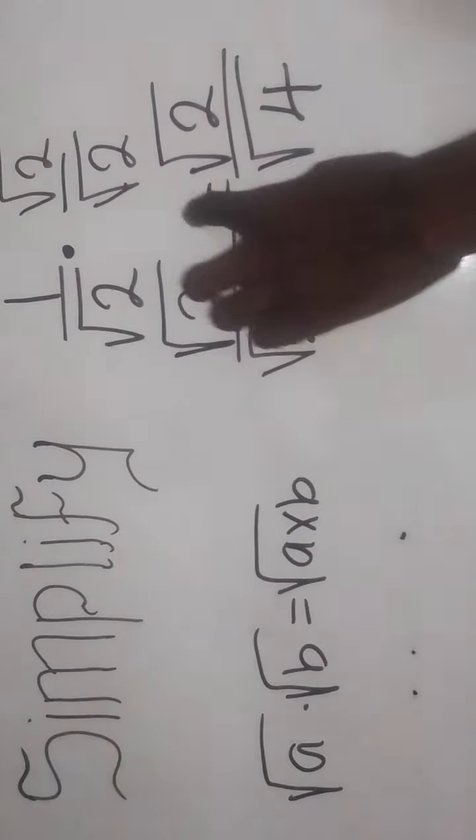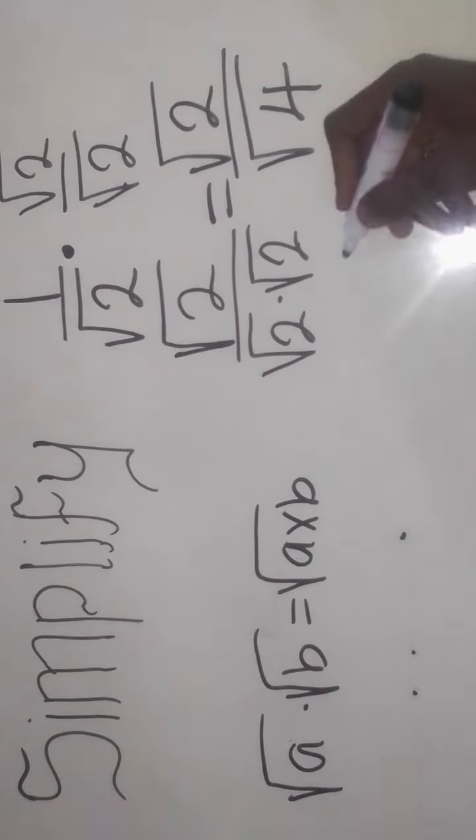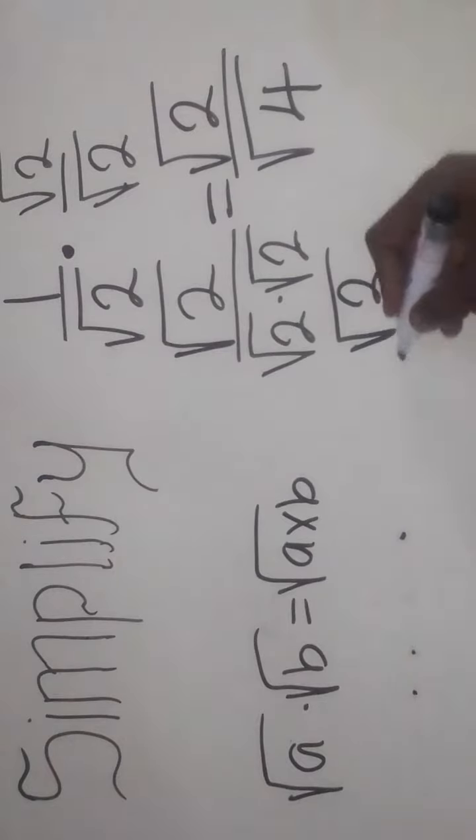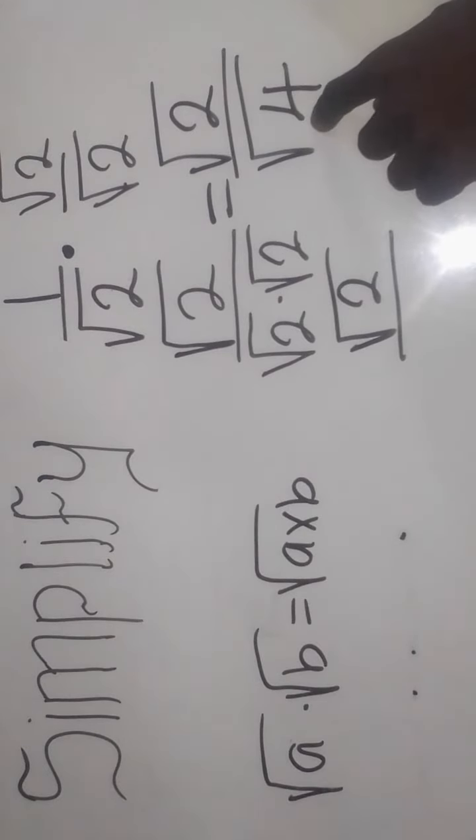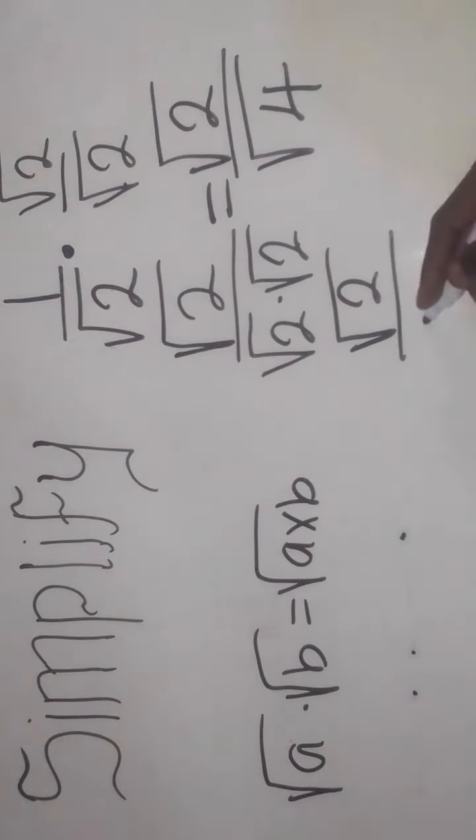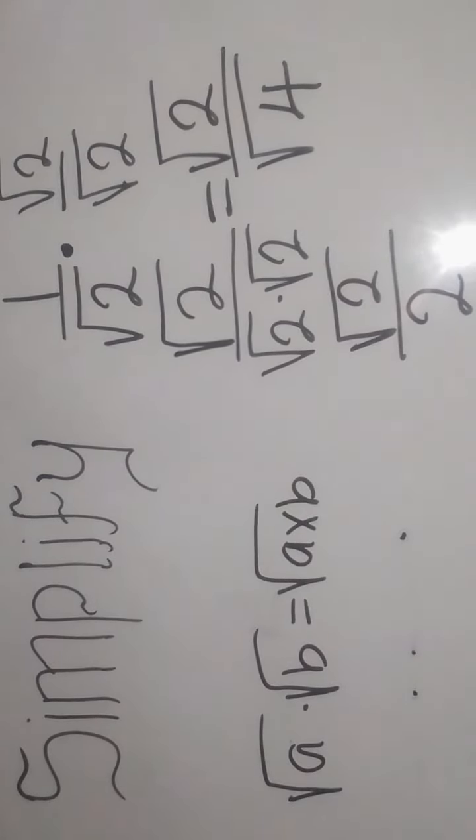So this square root of 2 on top will come down like this. What is the square root of 4? It's going to give me 2 there. So the square root of 2 over 2 is the answer.